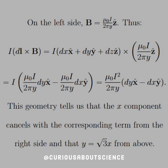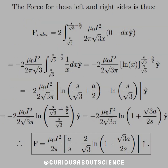Factoring out the magnitude of Y leaves mu naught I squared over 2 pi Y, times dY X-hat minus dX Y-hat. Since the geometry gives us symmetry about the vertical center, the X directions cancel, so the dY term is not something we need to worry about when integrating. From the triangle setup, Y equals square root 3 times X, again from tangent of 60 degrees. Putting this together, the force from the left and right sides is times two since there are two sides.